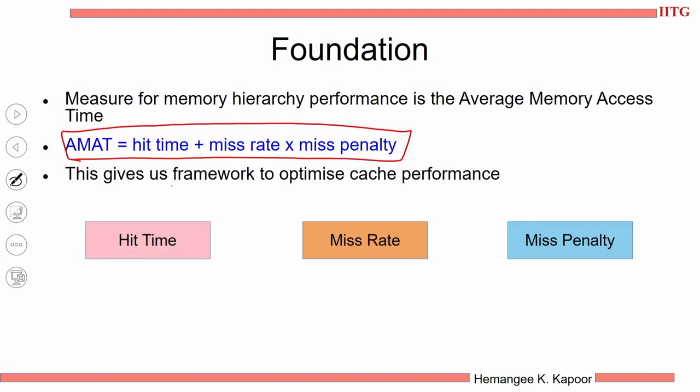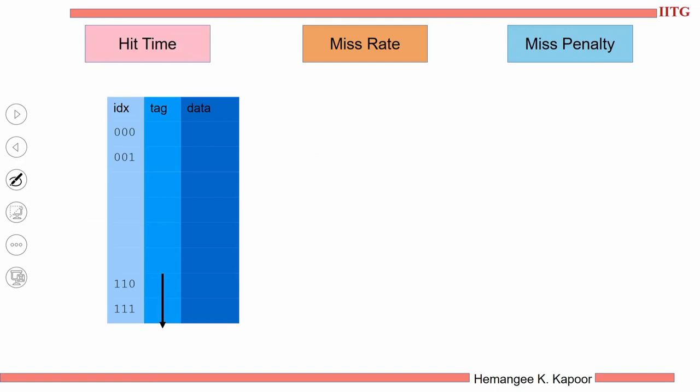This formula gives us a framework to optimize cache performance. We have three parameters: hit time, miss rate, and miss penalty. Very obviously, if I reduce the hit time, I reduce the miss rate, I reduce the miss penalty, overall the AMAT will reduce. Now, how do you understand each of these parameters? Because once we understand the components of each of these three terms, we will be able to optimize on them. In this slide, we are going to see how that is done.